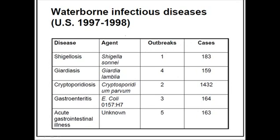Looking at outbreaks and cases in the United States from 1997 to 1998, cryptosporidiosis is causing the most cases. The maximum outbreaks are in cases of acute gastrointestinal illness, caused by many different species of bacteria — it may be amoeba, or it may be E. coli. This E. coli O157 strain, which causes gastroenteritis, can be seen in outbreaks many times, and we cannot easily distinguish between our normal E. coli and this pathogenic strain.